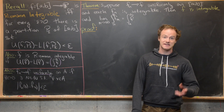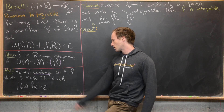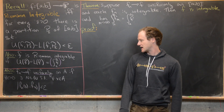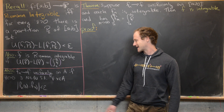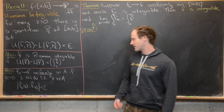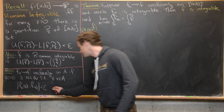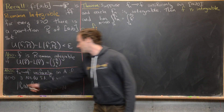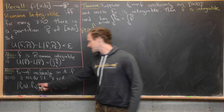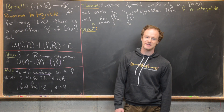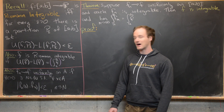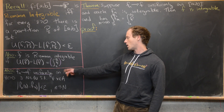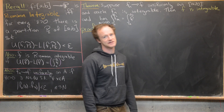Let's recall that a sequence of functions f_n converges to f uniformly on A if for every ε > 0 there is an N, a natural number, such that for all x in A, |f_N(x) − f(x)| < ε, and this is true for all n ≥ N. The important thing is that this N doesn't depend on where you are in A — that's what makes convergence uniform instead of point-wise.